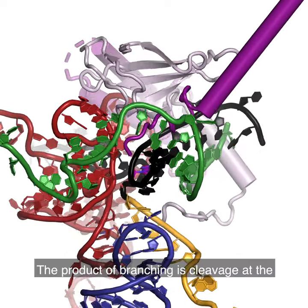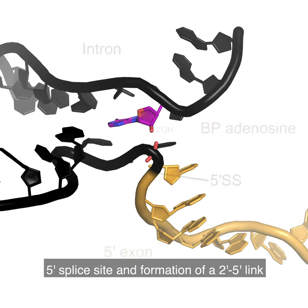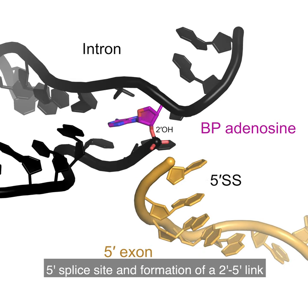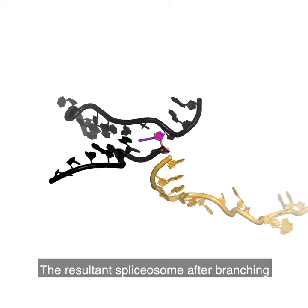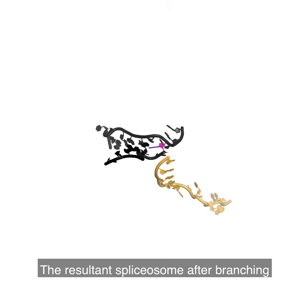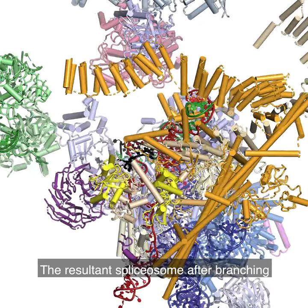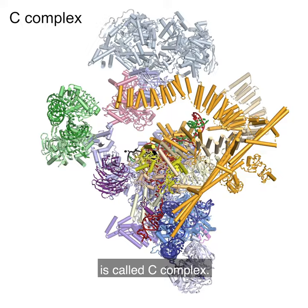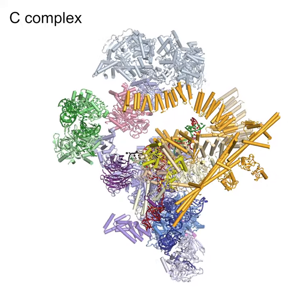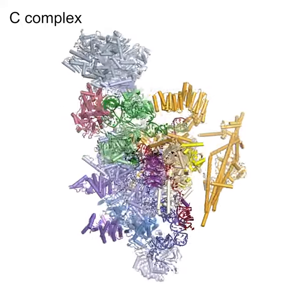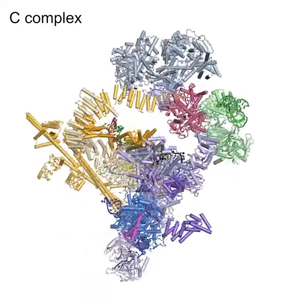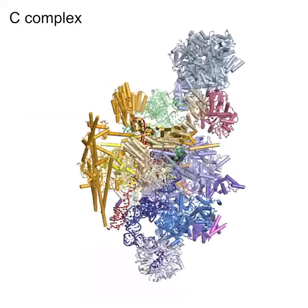The product of branching is cleavage at the 5' splice site and formation of a 2'-5' link between the 5' splice site and branch point. The resultant spliceosome after branching is called C-complex.